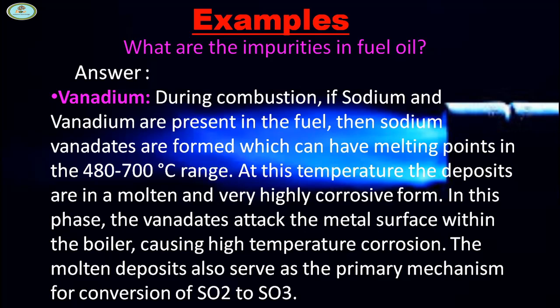Vanadium: during combustion, if sodium and vanadium are present in the fuel, then sodium vanadates are formed which have a melting point in the 480 to 700 degrees Celsius range. At this temperature, the deposits are in molten and very highly corrosive form.